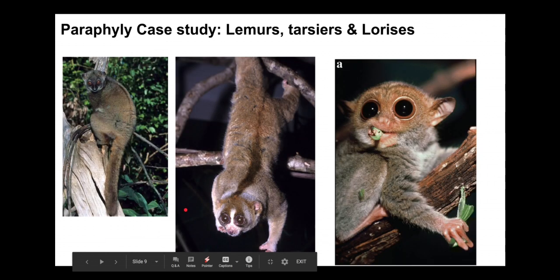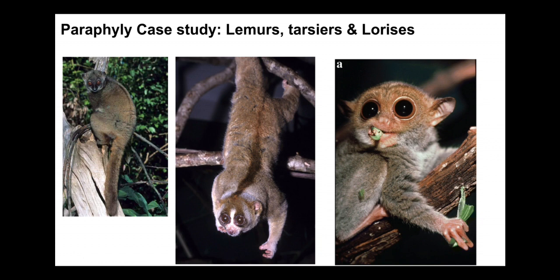In this video, for discussing non-monophyletic groups — paraphyletic and polyphyletic — I'll be talking about lemurs, tarsiers, and lorises, and a taxonomic group known as simians and prosimians. The prosimian grouping, which I was taught in school, is no longer in wide use because prosimians has turned out to be paraphyletic.